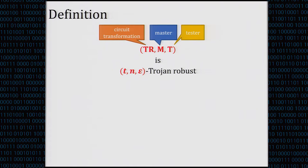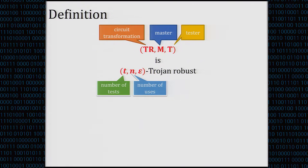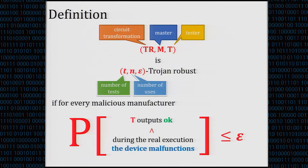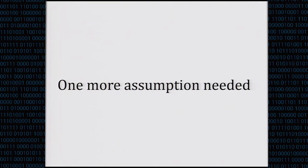We define the triple (TR, M, T) as TN-epsilon robust: where T is the number of times we tested, N is the number of uses in real life, and for every malicious manufacturer, the probability that the tests were passed but the device malfunctioned in real life is at most epsilon. This is when the adversary succeeds — if we didn't detect it during testing but the device caused a problem.